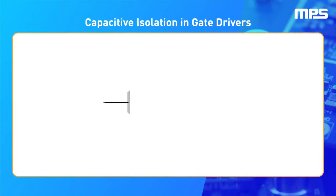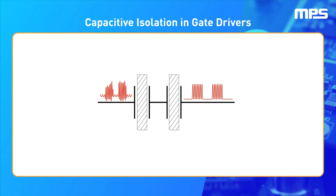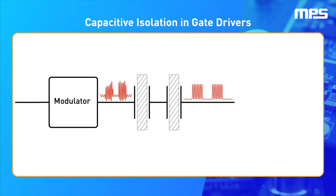The isolation barrier is formed by two high-value capacitors placed in series, which only allow the coupling of high-frequency signals. That's why capacitive isolation requires additional circuits to modulate the control signals, so that they can be sent safely through the isolation barrier.